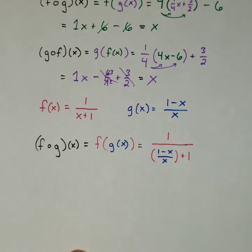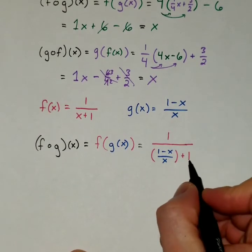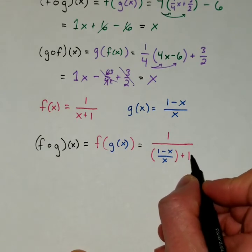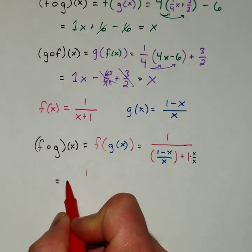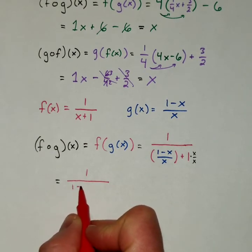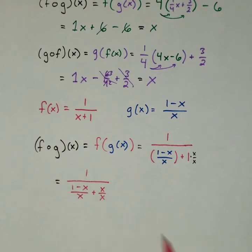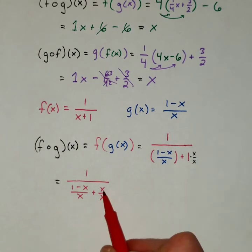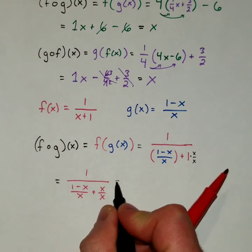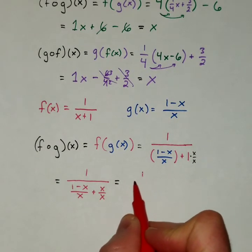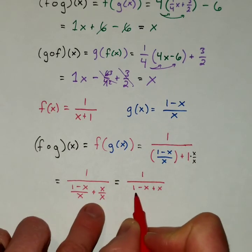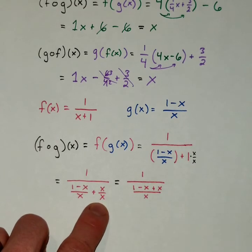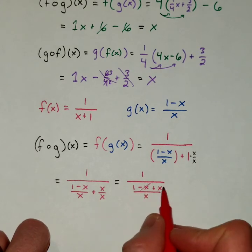To do that, this 1 has a denominator of 1, so it's really 1 over 1, and I'm going to multiply by x over x to get the common denominator. This fraction will become 1 over 1 minus x over x plus x over x. The 1 turns into x over x — same thing. Then we can combine the two fractions on the bottom. I get 1 minus x plus another x, all over the LCD of x.